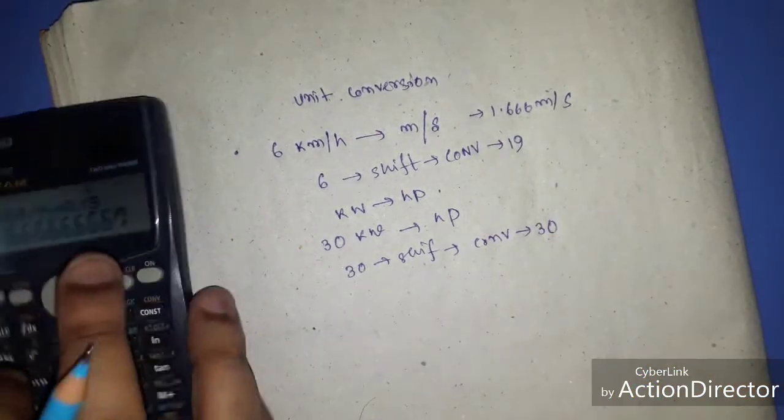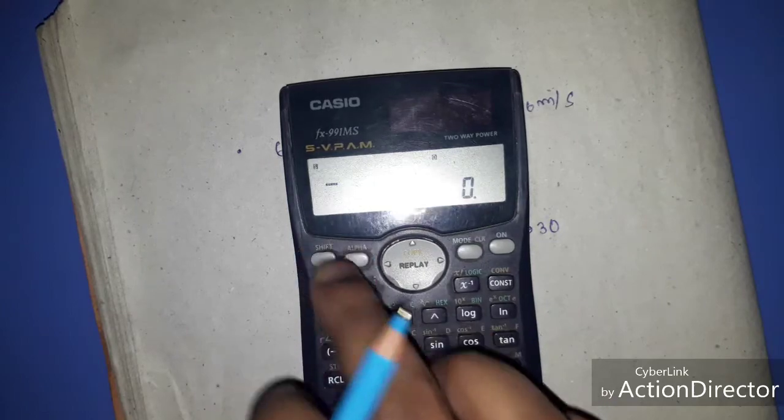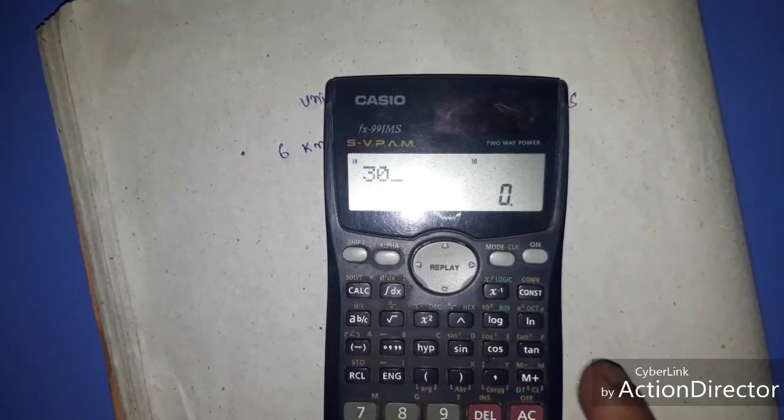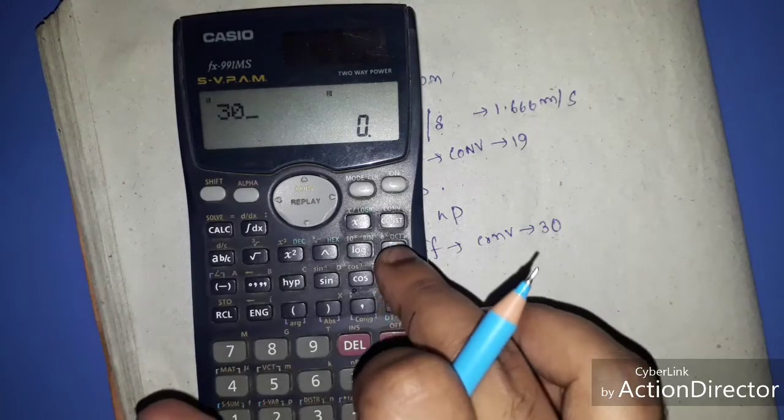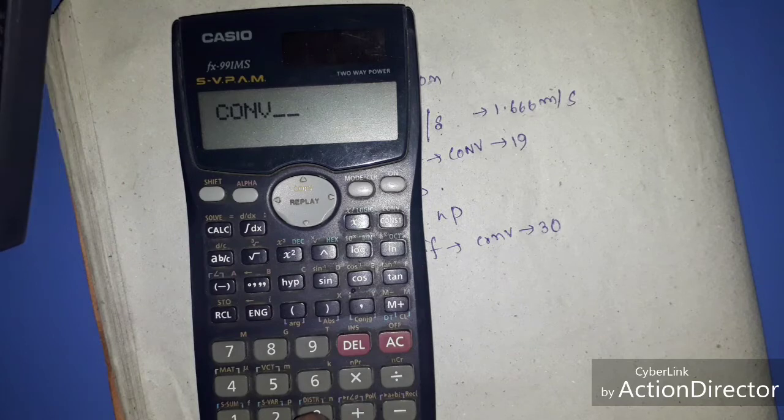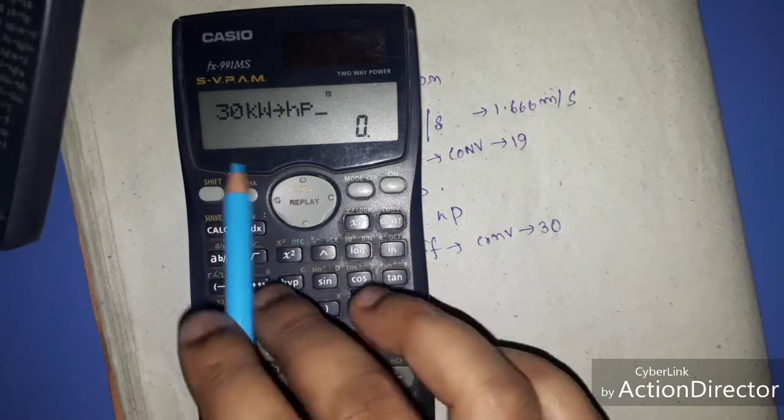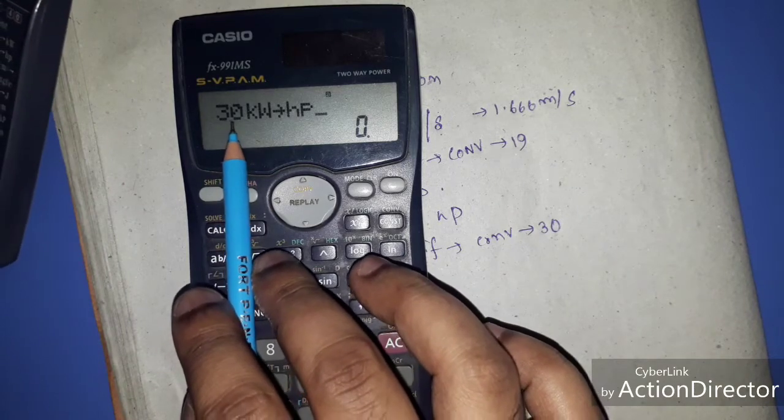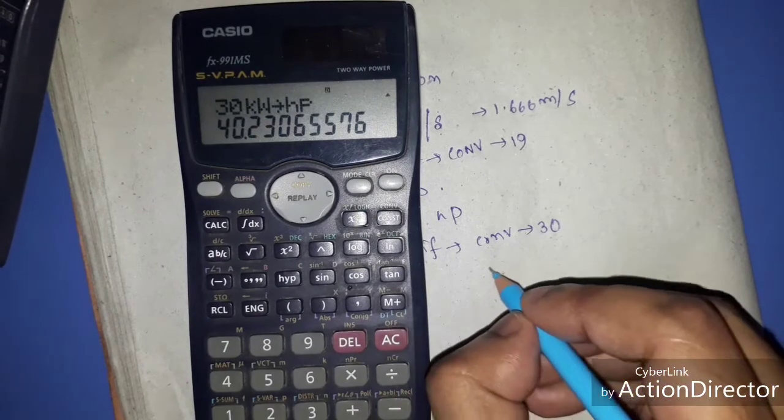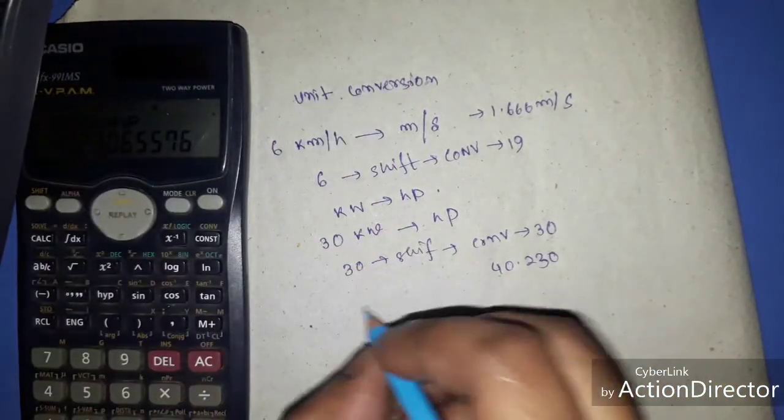It gives as 30. So now press shift, Conv and put the respective number 30. It already shows we want to convert 30 kilowatt to horsepower. So after pressing it gives 40.230.